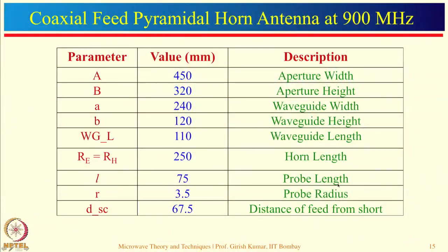This particular horn antenna was designed at 900 MHz. The probe length is approximately lambda/4, with a probe radius of 3.5 mm (diameter about 7 mm) — a larger diameter is taken because bandwidth is proportional to the diameter of the monopole antenna. For the 900 MHz waveguide, a = 240 mm and b = 120 mm. The flared dimensions of the pyramidal horn are capital A = 450 mm and capital B = 320 mm, with horn length r_e = r_h = 250 mm.